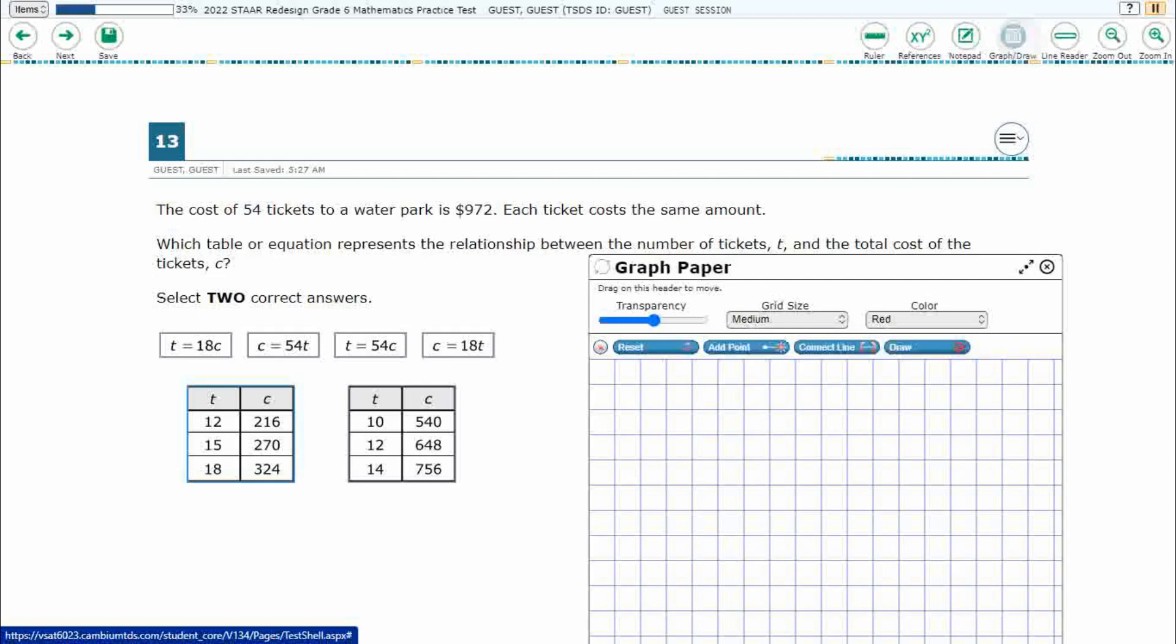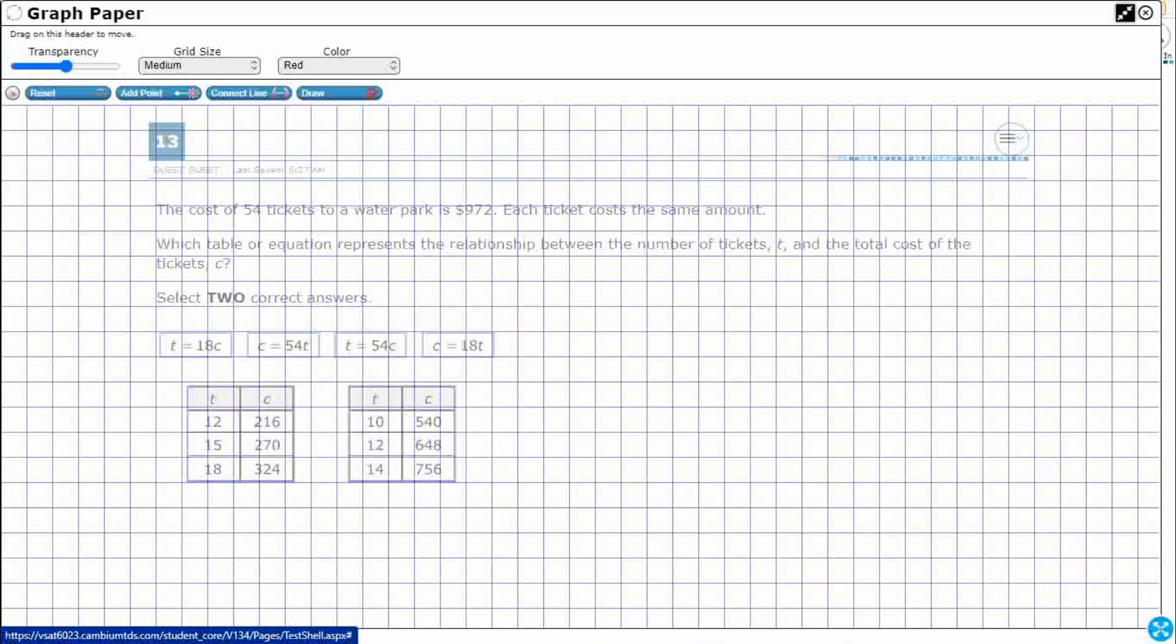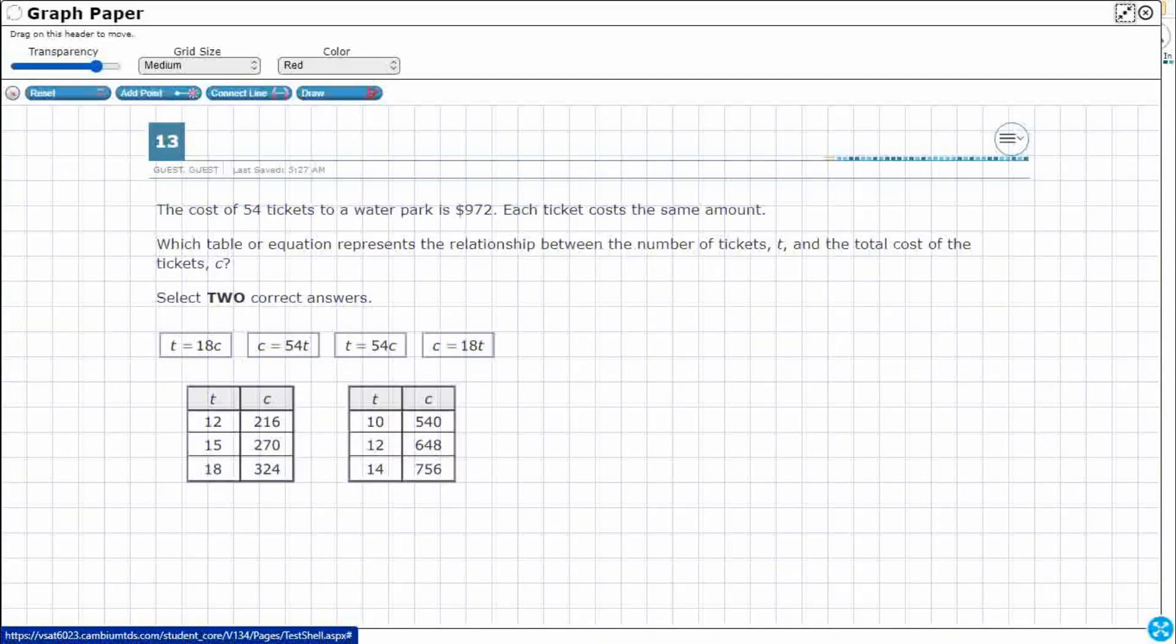It seems like the actual ratio here is not going to be that difficult, because they give it right to us. 54 tickets, 972. Each ticket costs the same amount. When we see this same amount, we should be thinking equal groups. And when we think equal groups, we know it's going to be multiplication or division.